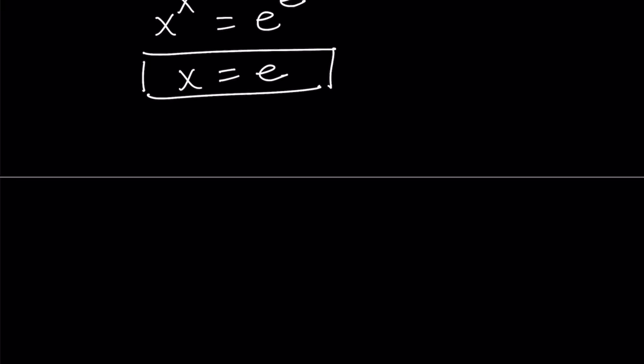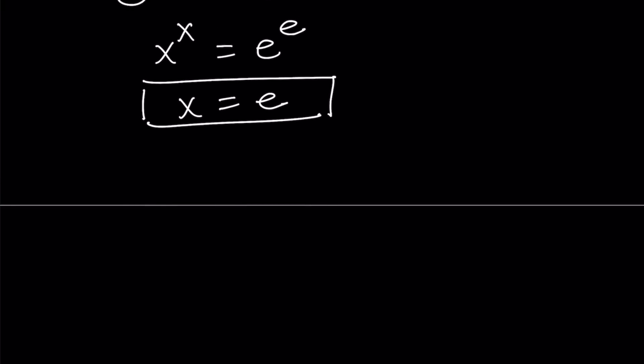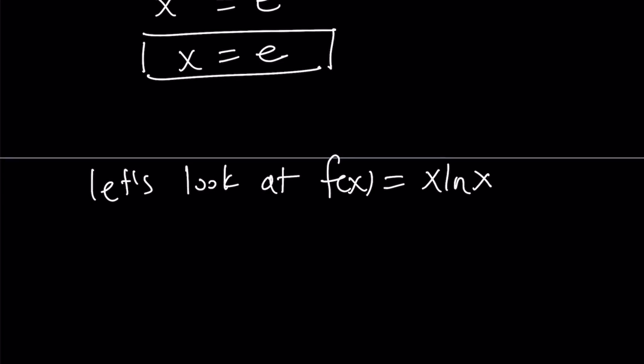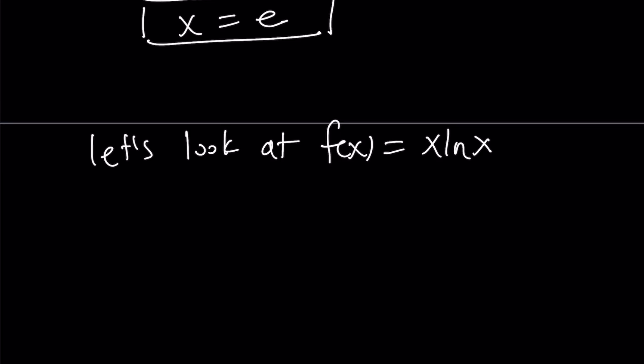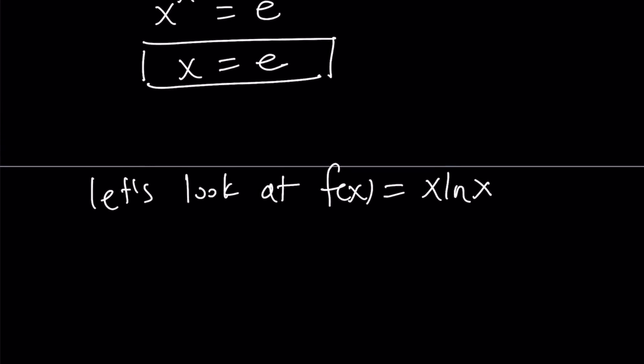So let's look at f of x equals x ln x. Now, this function is more interesting. And at the end, I'm going to show you the graph of this. And you'll have a better idea what I'm talking about. So now, in order to understand how this function behaves, like where it increases, where it decreases, does it have a minimum or maximum, any inflection points, so on and so forth, let's go ahead and differentiate it.